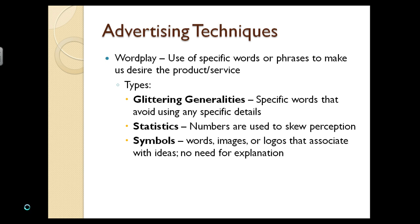Symbols are words, images, or logos that associate with ideas and don't need any explanation. You'll see this especially with sporting goods or fan merchandise — just because something has a Vikings logo or Green Bay Packers colors doesn't mean it's a better product. But symbols can also get someone to buy more than once: maybe you already have one, but now it comes in your team colors and you want a second one.